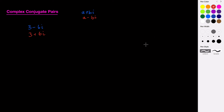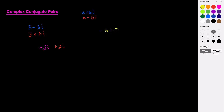Let's look at a few more examples of complex conjugate pairs. If we had just the imaginary number negative 2i — you could think of this as 0 minus 2i — its conjugate would be positive 2i. Those two are conjugate pairs. Another example: if we have negative 5 plus 3i as one of our complex roots, then we would also know that negative 5 minus 3i would be a root, because they come in conjugate pairs.